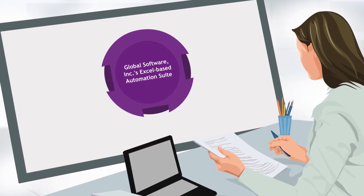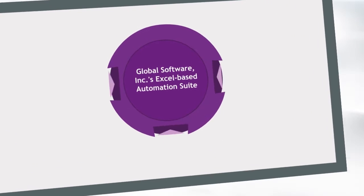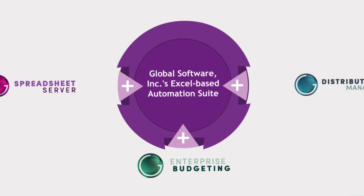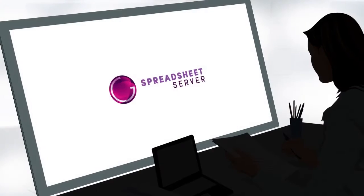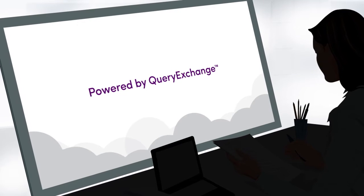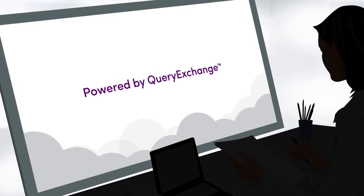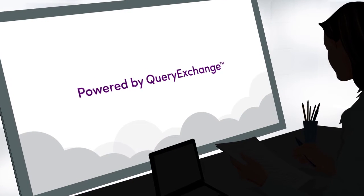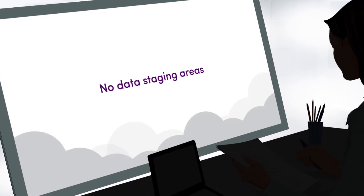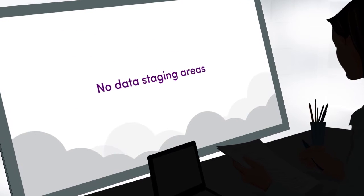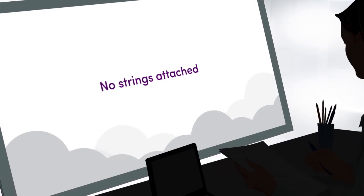Global Software Incorporated's Excel-based automation suite is made up of three components. Spreadsheet Server, powered by Query Exchange, provides access to all of the data from your ERP and beyond from within Excel. This means no data staging areas, no data cubes, no strings attached for you.